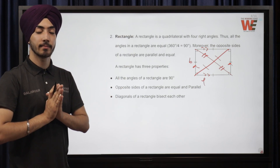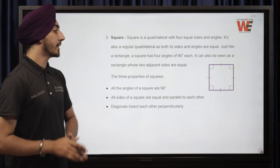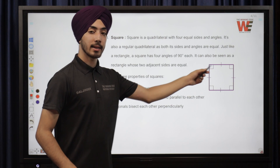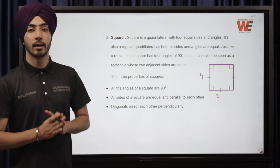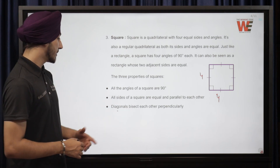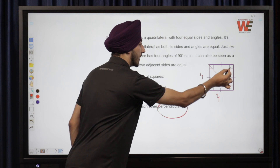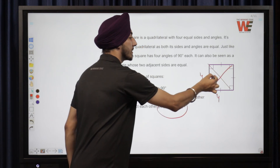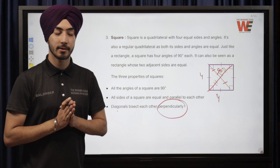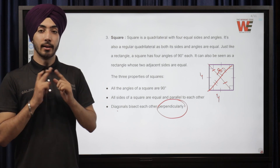Next we have a square. A square is similar to a rectangle and all its properties are similar, with one key difference: it has all four sides equal, whereas in a rectangle only opposite sides are equal. All angles are 90 degrees. An important property is that the diagonals bisect each other perpendicularly — they meet at an angle of 90 degrees — whereas in a rectangle the diagonals do not cross at 90 degrees.